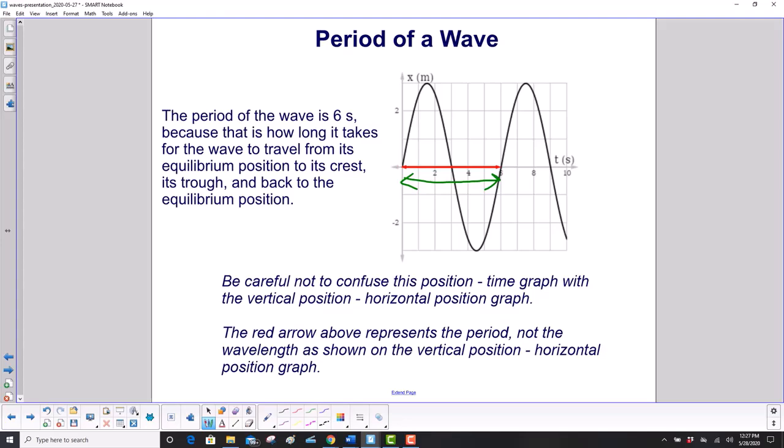Be careful not to confuse this position-time graph with the vertical position-horizontal position graph that we used earlier. The red arrow here represents the period. On the vertical position-horizontal position graph, that arrow would represent the wavelength.